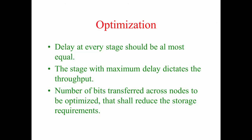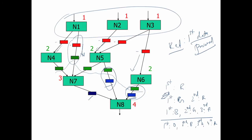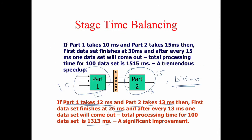When doing pipelining, the modules N1 through N8 should have similar complexity in terms of delay. One stage should not have a much larger delay than another. This is called stage balancing. Without balancing we got 1515 milliseconds; with balancing we can achieve 1313 milliseconds. We need to balance the stages to get good speed-up.